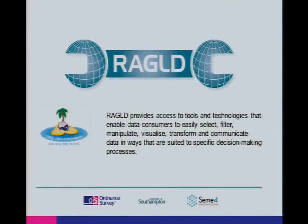To summarize, what we built was a set of tools and technologies to make it easy to select, filter, manipulate, visualize, transform, and communicate data — bringing all of these things together in a number of simple components to create interesting applications. At the moment we're trying to figure out what we're going to do with it — whether we're going to open source it or otherwise exploit it — so watch this space. That's the RAGLD framework: lots of components, chain them all together, build applications in a relatively straightforward manner.